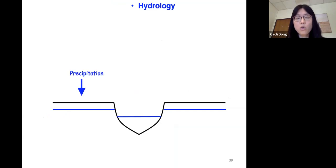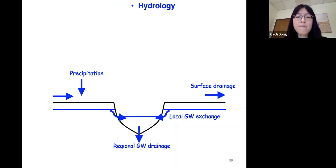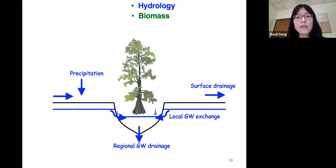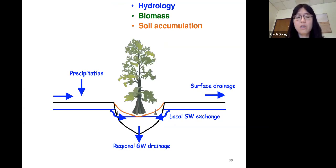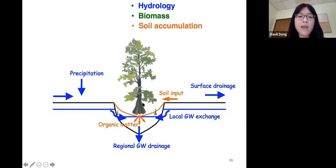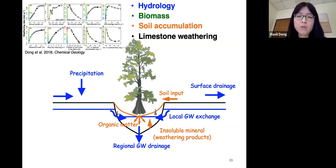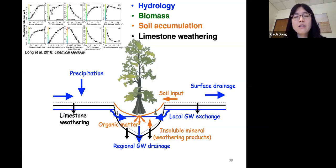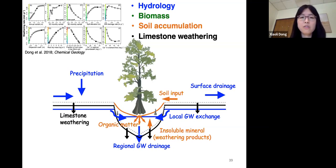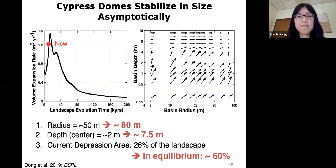We incorporated all these processes in this morphodynamic model with detailed hydrological processes including evapotranspiration, surface transport, and groundwater exchange, plus simple biological processes representing tree growth, soil accumulation in depressions from upland diffusion and insoluble weathering products from limestone. We also incorporated the limestone weathering process derived from the first model. We ran this model to determine whether the system has some kind of equilibrium state and what the future of these depressions will look like.